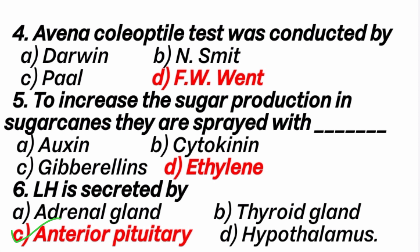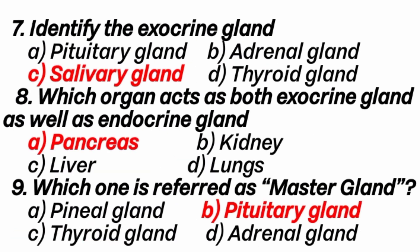The pituitary gland has an anterior lobe and posterior lobe. The anterior lobe secretes: Growth hormone, TSH hormone, ACTH hormone, FSH hormone, LH hormone, and lactogenic hormone or prolactin hormone. So totally 6 hormones.